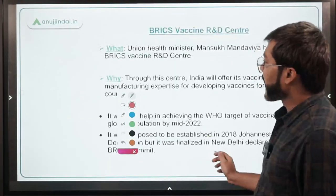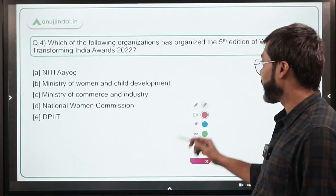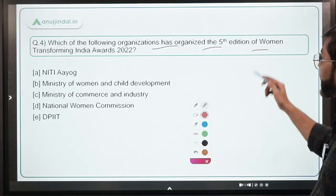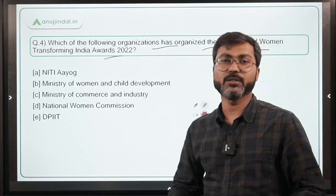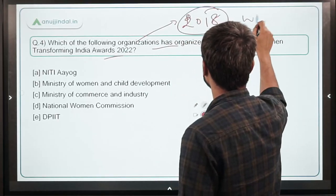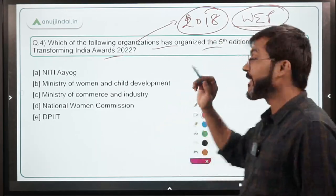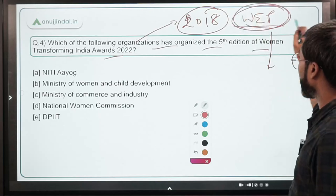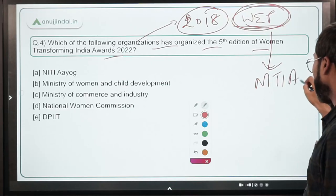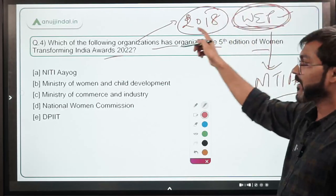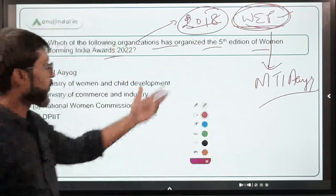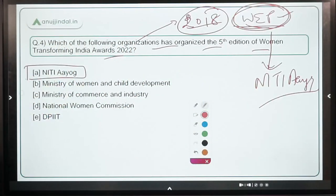Now let's talk about question number four — a very important question likely to be asked for one mark. Which of the following organizations has organized the fifth edition of Women Transforming India Awards 2022? These awards were started in the year 2018 under the Women Entrepreneurship Platform of NITI Aayog. This platform is being run by NITI Aayog, and under it these awards have been distributed since 2018. This was the fifth edition. The correct answer is option A — NITI Aayog.